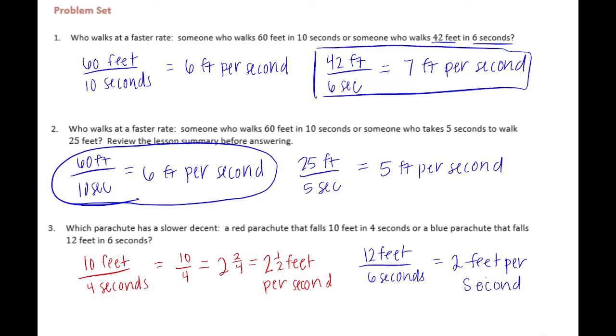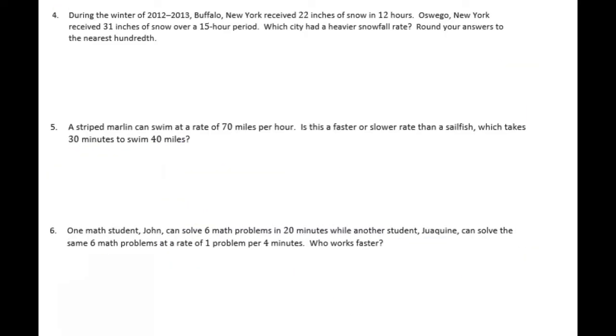Which one has a slower descent? Either 2 and a half feet per second or 2 feet per second. The slower descent would be 2 feet per second. It's important that you read that closely because if it was asking for the faster one we would have picked the red one, but since it's asking for the slower one, it's the blue.